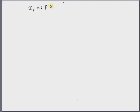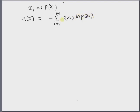Hello, welcome. In this short video, let us look at the upper bound on the discrete entropy. Given a discrete random variable xi that has a probability mass function p of xi, the discrete entropy is given by the summation i equal to 1 to m, where m is the number of samples, of the probability of xi multiplied by log of p of xi. This is the definition of discrete entropy.